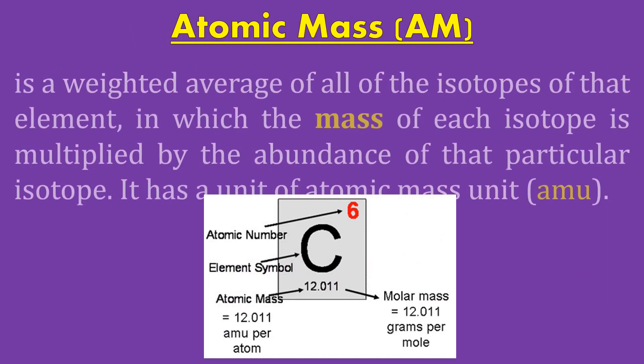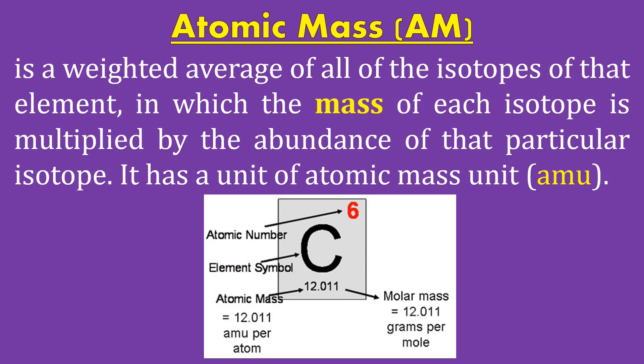Atomic mass is a weighted average of all the isotopes of that element, in which the mass of each isotope is multiplied by the abundance of that particular isotope. It has a unit of atomic mass unit, or AMU. Isotopes are different forms of an element that have the same number of protons but different numbers of neutrons.